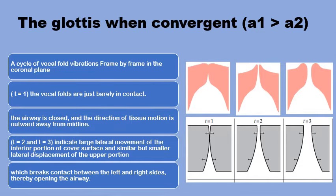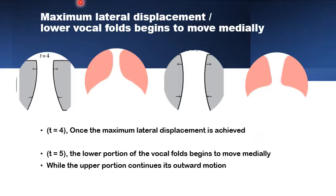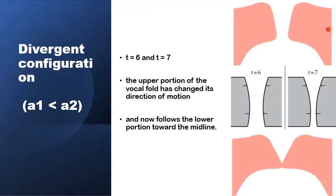Once the maximum lateral displacement of the adducted medial ends of the vocal folds is reached, the lower margin of the vocal folds recoils and starts to move medially, while the upper end is still lagging behind. So in T5, the direction of movement of the lower end is different from the direction of movement of the upper end. In T6, the lagging upper end of the vocal folds starts to change direction of movement and now moves medially together with its lower end, which has now reached the midline in T7 and meets the opposite lower end of the other vocal fold, closing up the glottic canal.